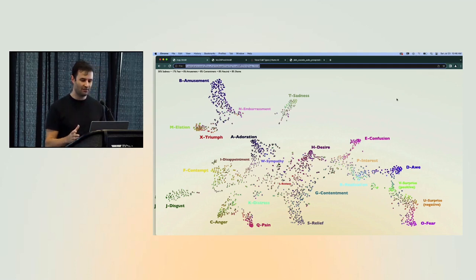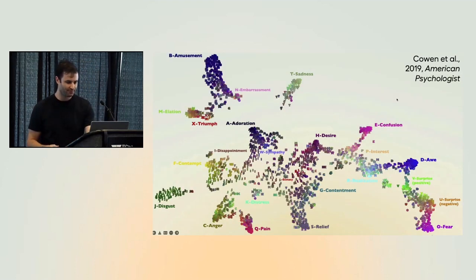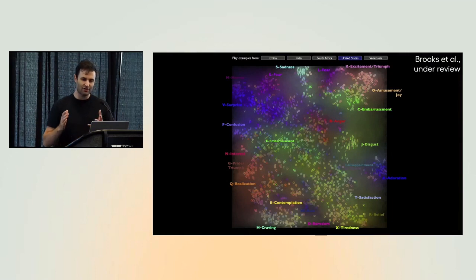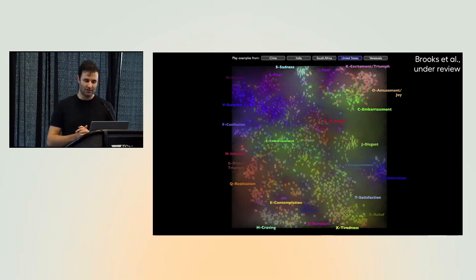So vocal bursts are these incredibly rich signals that convey many, many different dimensions of meaning. And if you try to force these into six categories, for example, you end up capturing a small fraction of the variance. The high dimensionality of expressive behaviors like vocal bursts of course poses a challenge for machine learning. You need a lot of data to really disentangle all of these different dimensions. And so that's what motivated us to start collecting data sets like the Hume VB dataset.